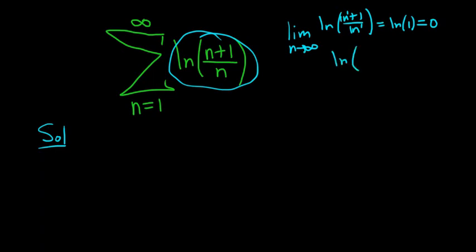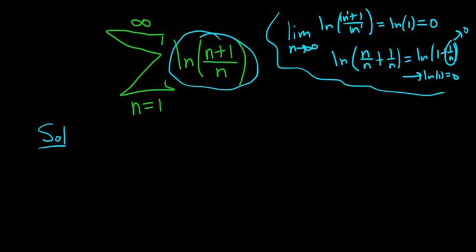Another way to think about the limit is you can break it up. It's n over n plus 1 over n. So that's ln of 1 plus 1 over n. And then as n goes to infinity, this approaches the natural log of 1, which is 0, because 1 over n here approaches 0. So the n-th term test is completely useless. It doesn't help, but it's something that you should at least mentally think about.